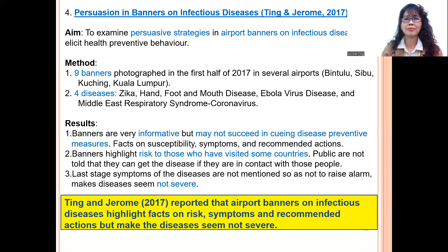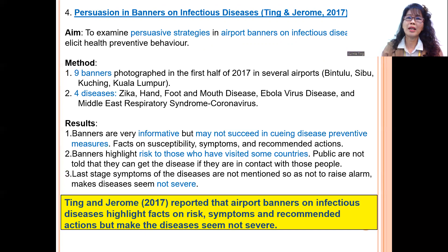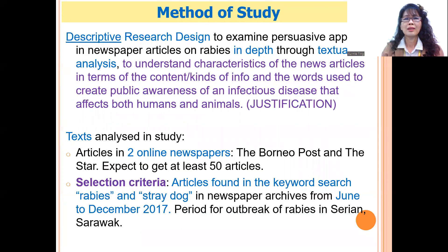Tin and Jerome (2017) examined persuasive strategies in airport banners on infectious diseases such as Zika, hand, foot and mouth disease, Ebola virus disease, and Middle East Respiratory Syndrome coronavirus. Most of the information in airport banners were facts on the risk of the diseases, symptoms, and recommended actions. The banners were very careful to avoid creating panic, and therefore the disease did not appear severe.